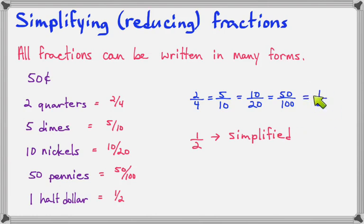One half is special, because notice that nothing will go into both of these numbers. On this one, ten will go into both of these numbers, and so would five, and so would fifty. On this one, ten will go into both of these numbers. Five will go into both of these numbers. Two will go into both of these numbers. So all of these fractions could be simplified. This one cannot because nothing will go into both of those. So this one is considered simplified.